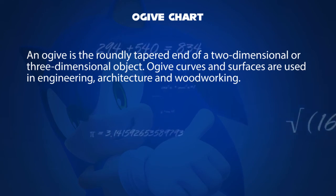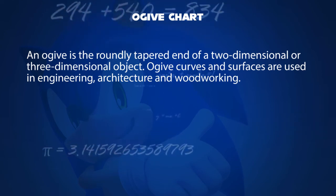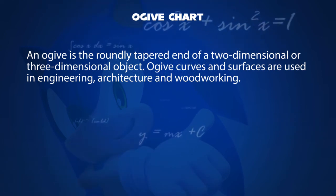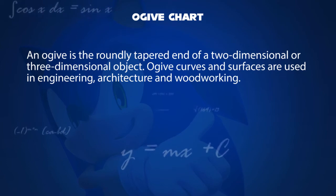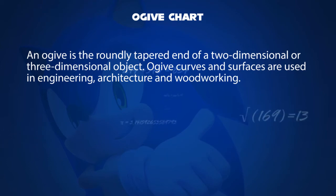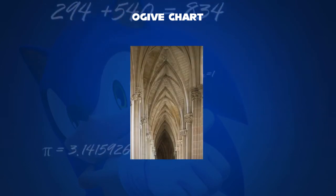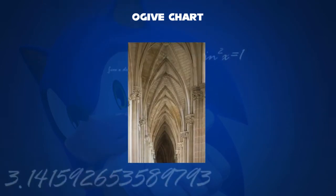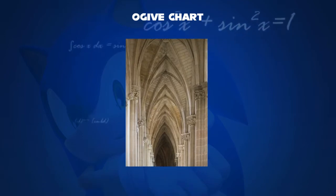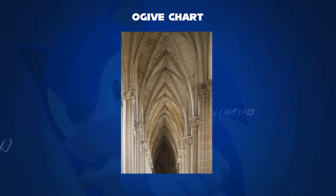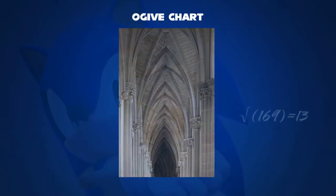For applications, ogive curves and surfaces are widely used in engineering, architecture, and woodworking. For example, the pointed arch as an architectonic principle in the Middle East in the middle of the ancient times.